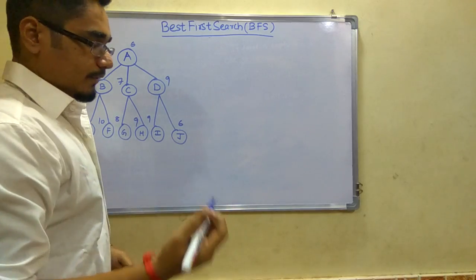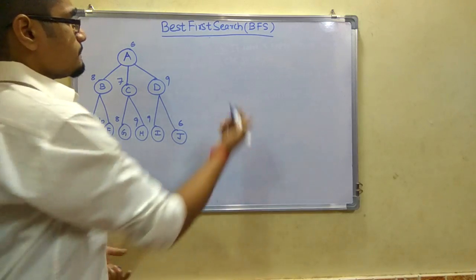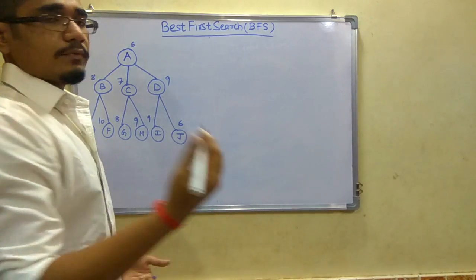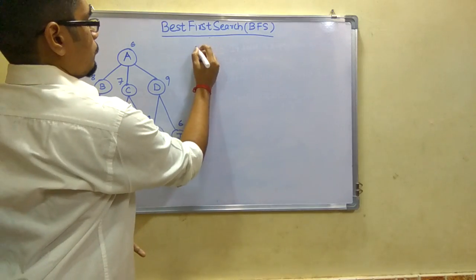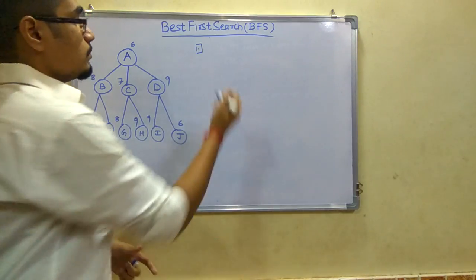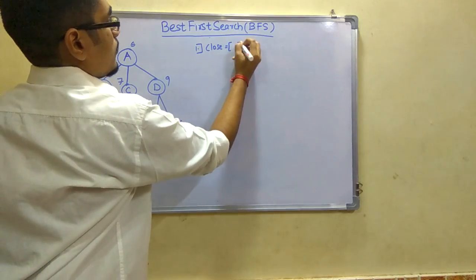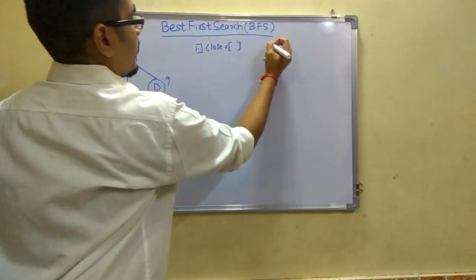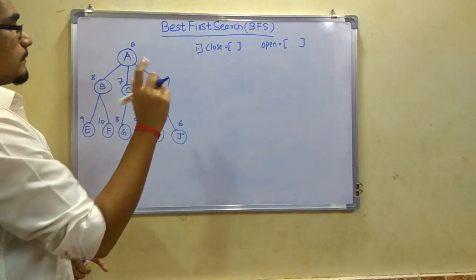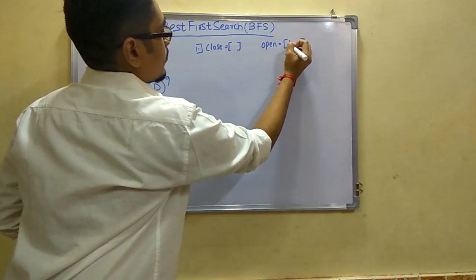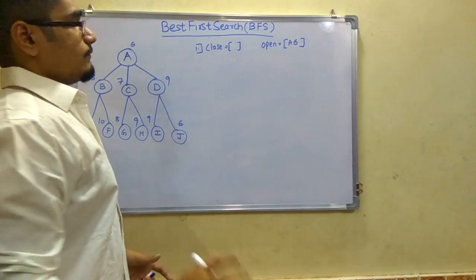We have got five steps basically. It is very easy to solve with BFS. We have two sets - a set of close members and set of open members. First, we create a set of close and assign it to empty. Next, we create a set of open and put the root node A with weight 6.